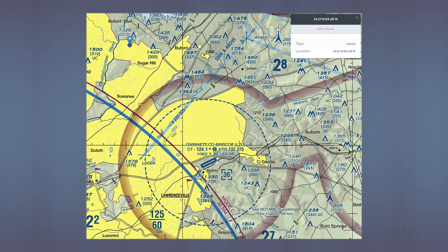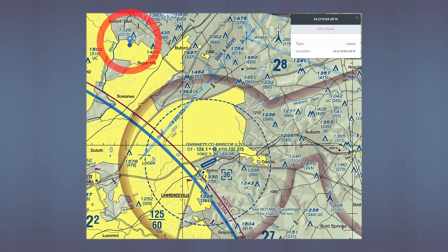Next you'll need to look at a sectional chart. Determine the closest airport to your longitude and latitude coordinates and find out what airspace you'll be flying in. In this case we'll be flying here — looks like we'll be in Class G, so we don't need an authorization, just a waiver so that we can fly at night. Next, write a brief description of what you'll actually be doing for that flight.